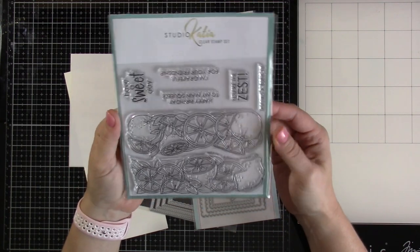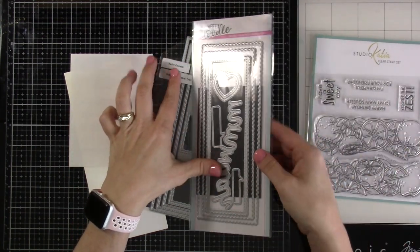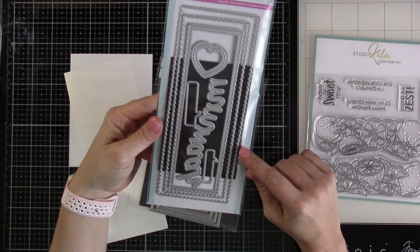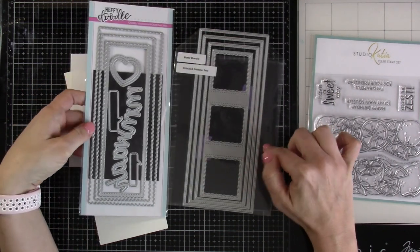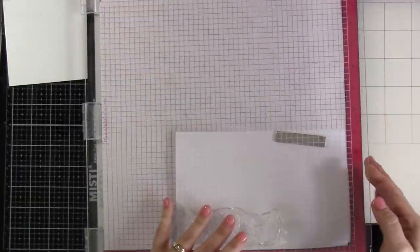So we're going to be using this Citrus Trimmings stamp set by Studio Katia. And then we're going to pair that up with the Heffy Doodle Stitched Slimline Trio and the Heffy Doodle Sweet Scalloped Slimline Dies. As you guessed it, we're making a slimline.